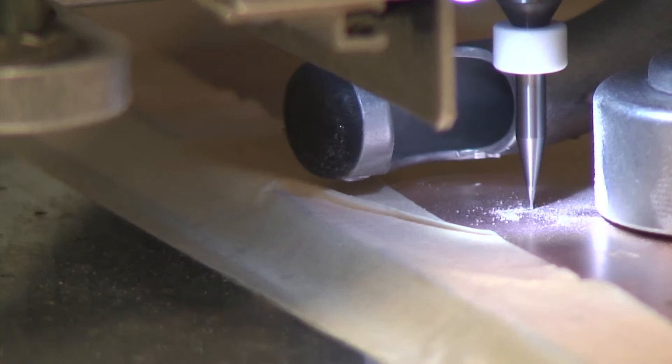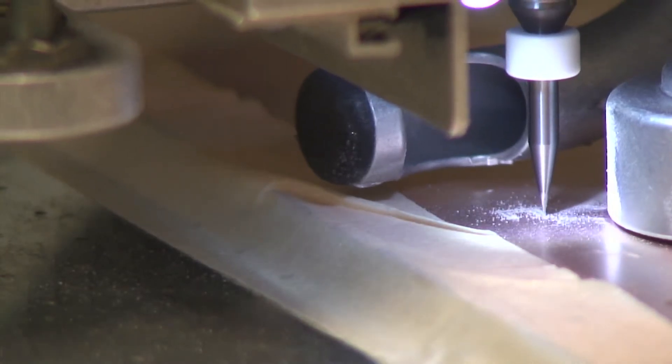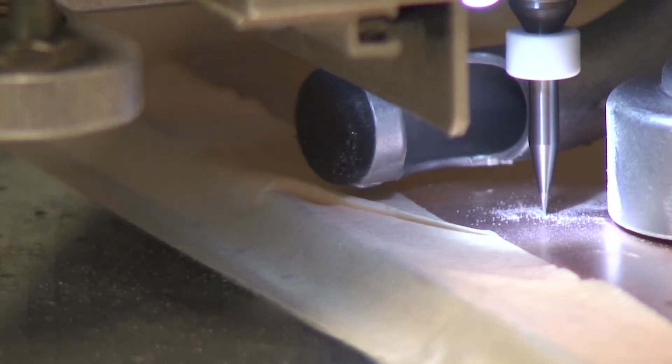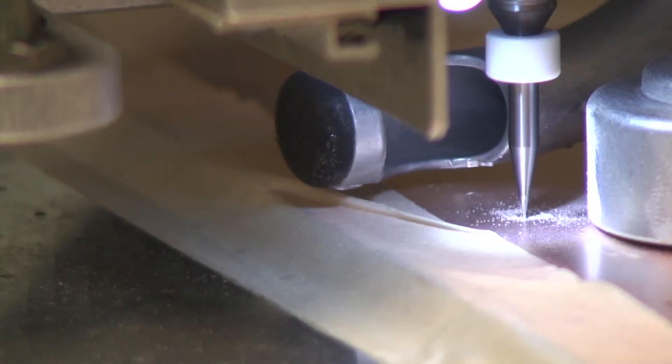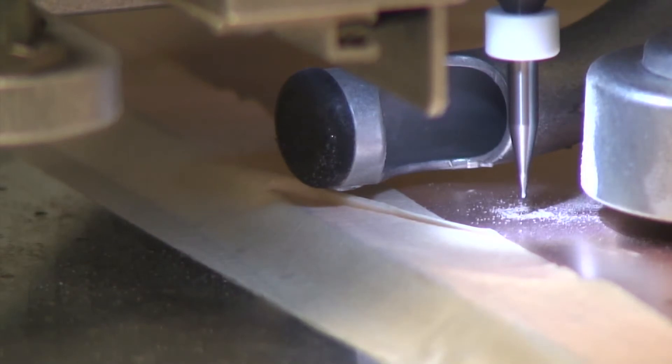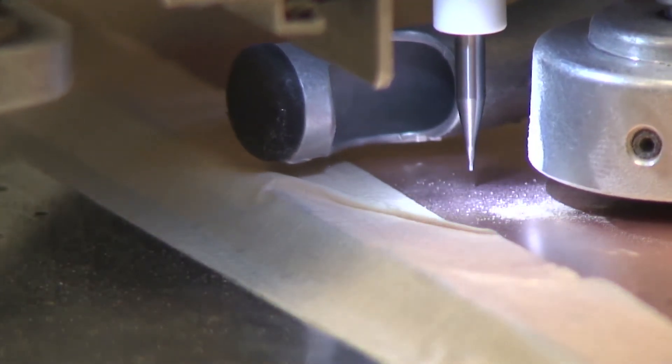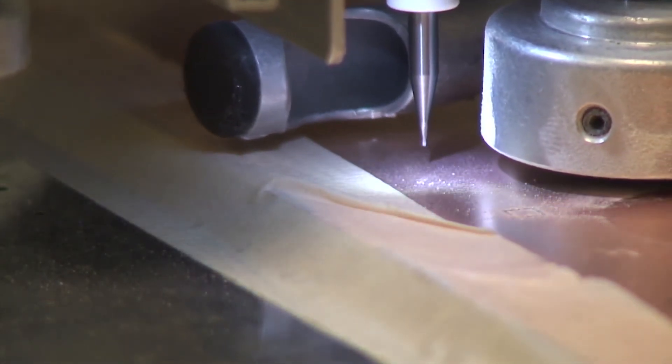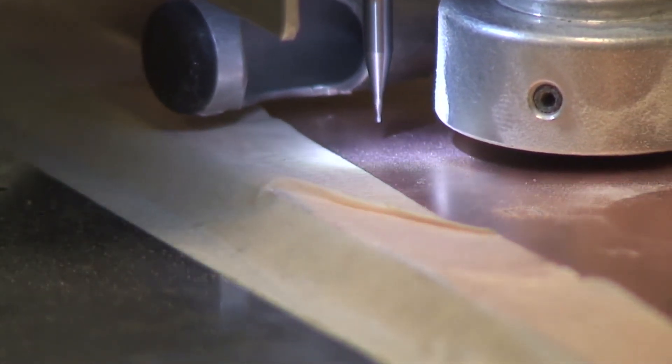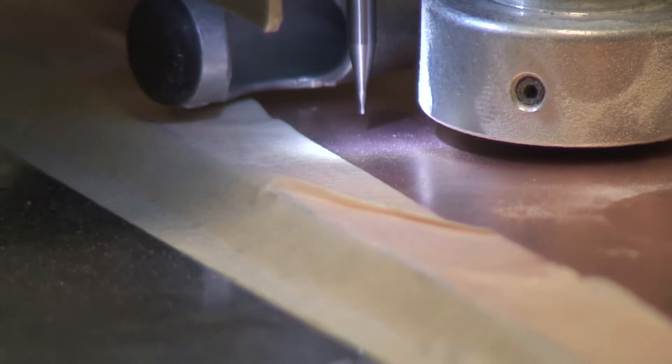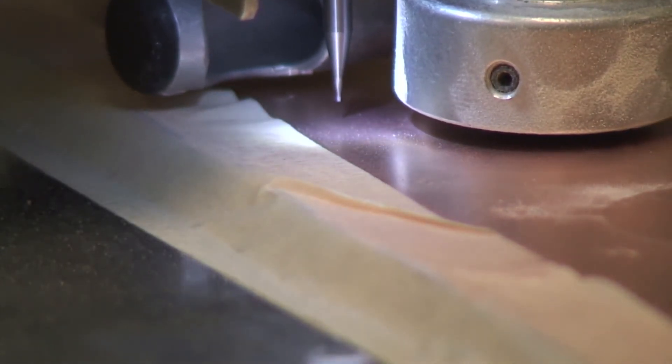This allows us to gauge how well the mill is cutting, if it's sharp, if it's dull, if it's at the right depth. All these things will be tested in this initial cut. You want to make sure that you're somewhere that is not going to be used in your actual circuit. Once you've made your initial cut or test cut, you can go ahead and use the same jog window to move the head out of the way so we can take a closer look at the cut that we just made.